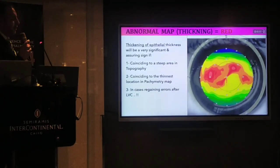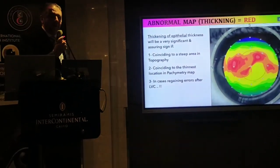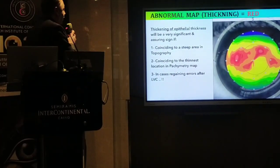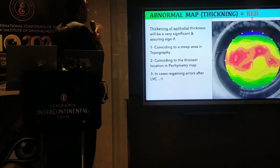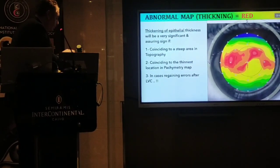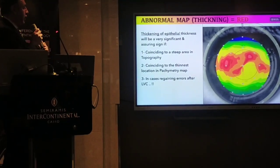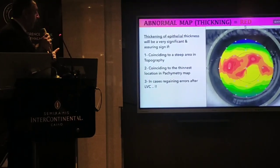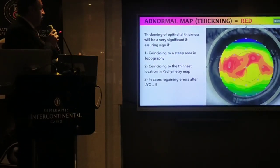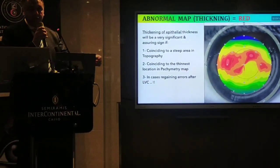This is a good sign. The spot is red, but it's a good sign — it shows thickening of the epithelium all over the steepening part. Thickening of the epithelial thickness will be very significant and an assuring sign if it coincides with a steep area in the topography and also with the thinnest location in the pachymetry map, and also in cases of refractive errors after laser vision correction, as I will show later.